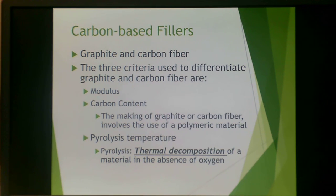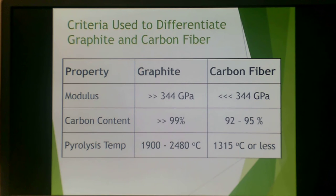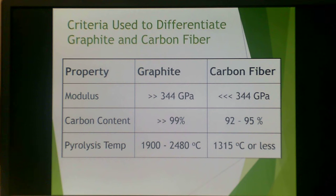Carbon-based fillers include graphite and carbon fiber. Three criteria differentiate between them: modulus, carbon content, and pyrolysis temperature. Graphite has a much higher modulus than carbon fiber. The carbon content of graphite is nearly 100%, whereas carbon fiber tends to be 92–95%. The pyrolysis temperature of graphite is significantly higher — up to 2500°C — whereas carbon fiber is about 1300°C or less. Pyrolysis is defined as thermal decomposition of a material in the absence of oxygen.